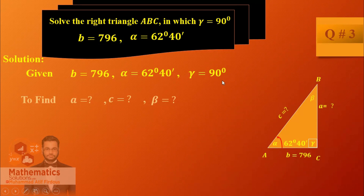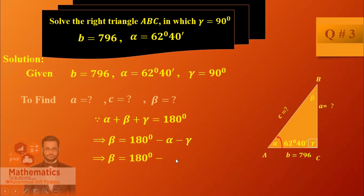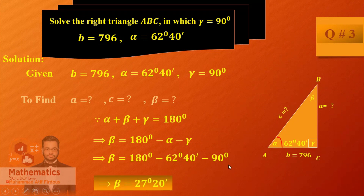Beta is defined as not involving the hypotenuse this time — it was base and hypotenuse. So first of all, find the angle. Using alpha plus beta plus gamma equals 180 degrees, beta equals 180 minus alpha minus gamma. Alpha is 62 degrees 40 minutes and gamma is 90 degrees, so we can find beta.